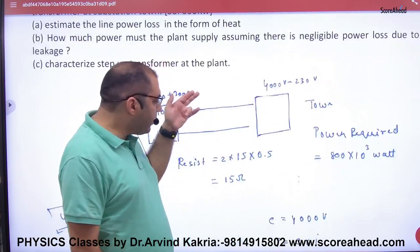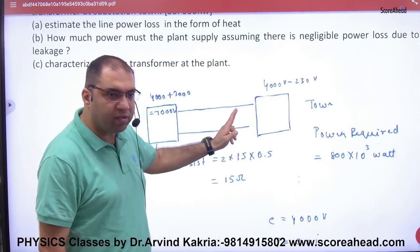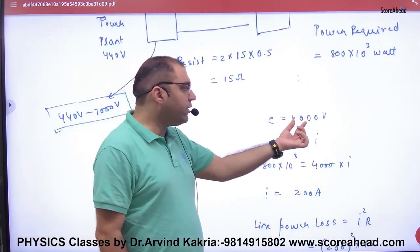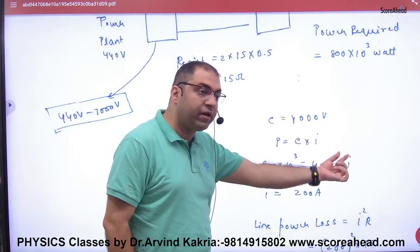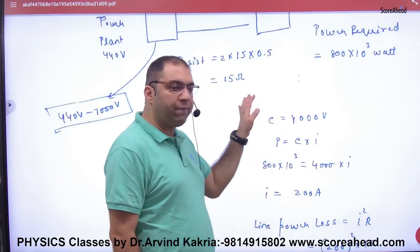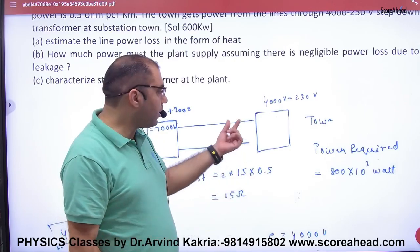Output power is 800×10³ watts. Input power is 800×10³ watts. Current is 200 ampere here, resistance is 15 ohm.